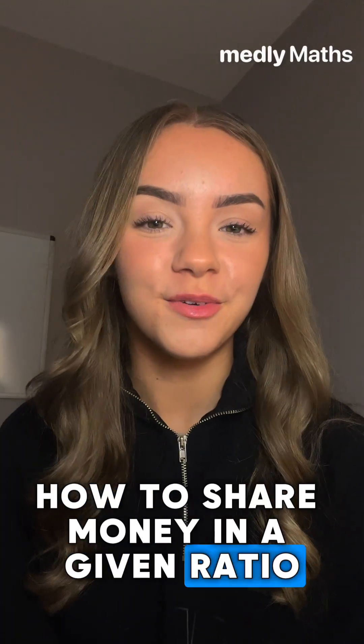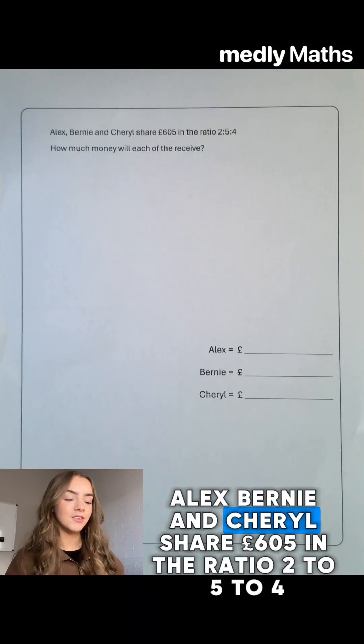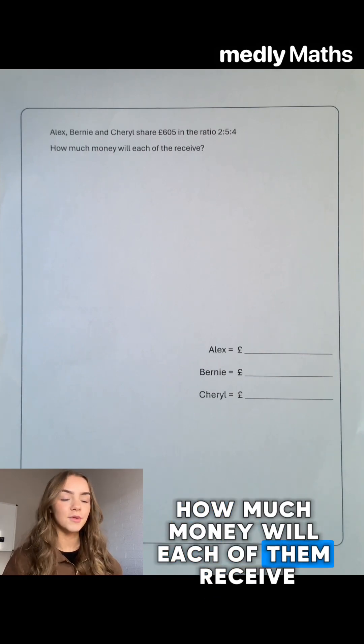How to share money in a given ratio. Alex, Bernie and Cheryl share £605 in the ratio 2 to 5 to 4. How much money will each of them receive?